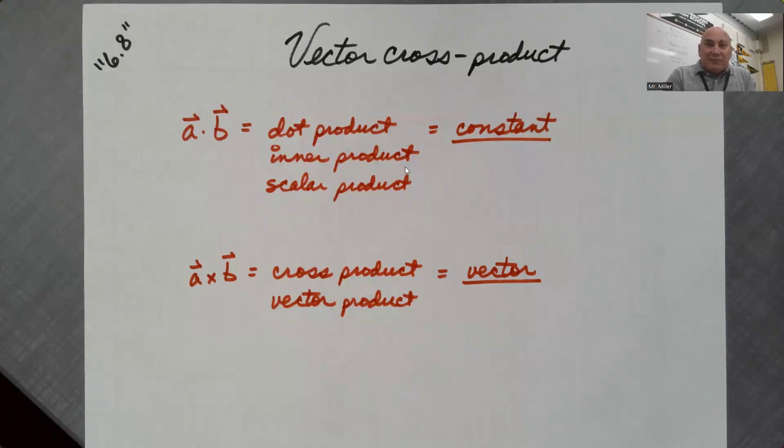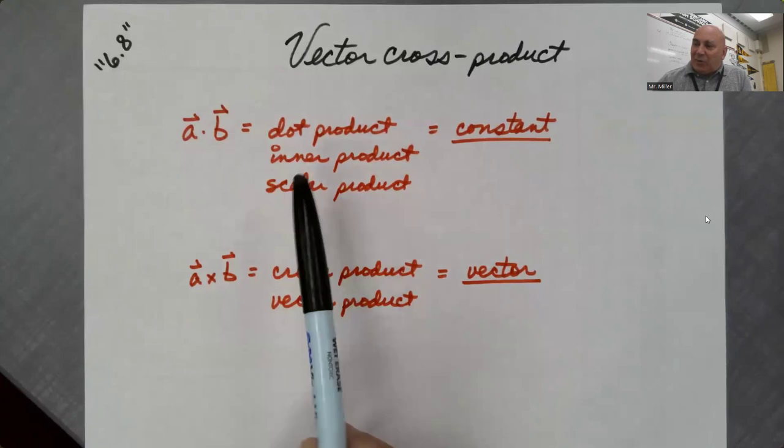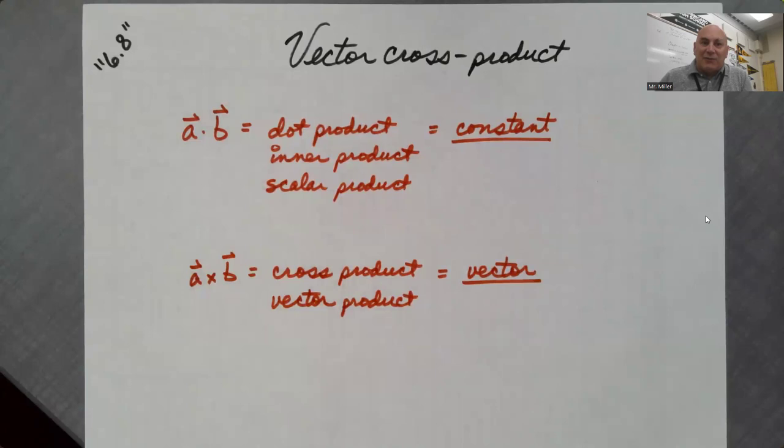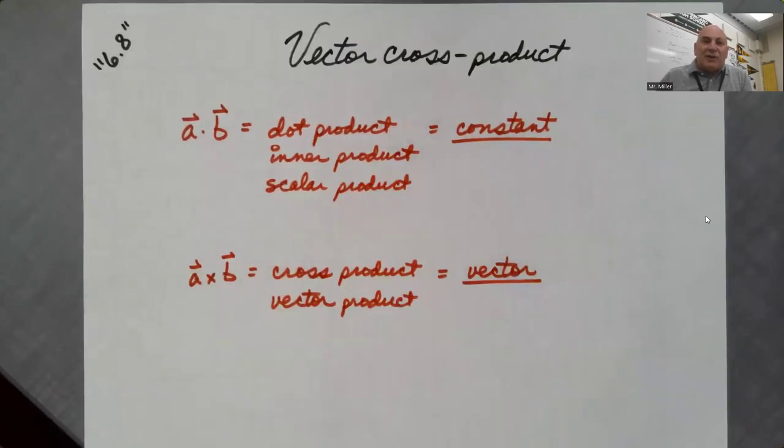Now, as you can see what's on your screen, A dot B can go by any of these three names, but we always say A dot B. That's how you say that. It's not times. That will always give you a constant, and we've already worked enough of those problems that you know that's the case.